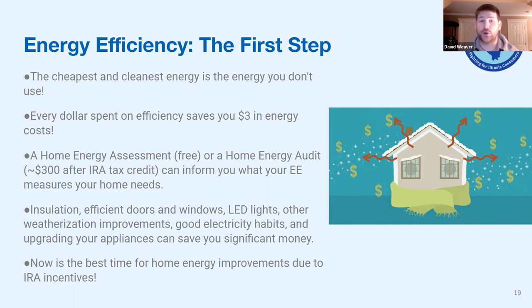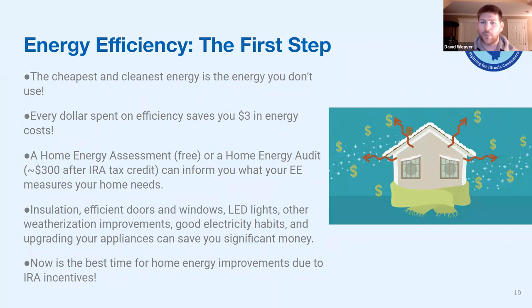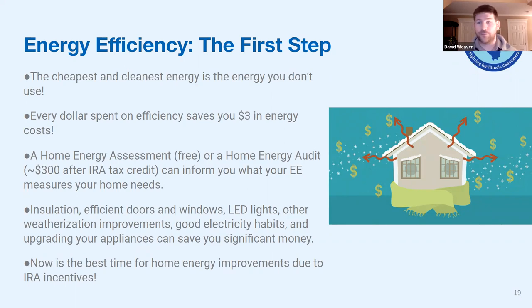The first step to energy efficiency is a home energy assessment or home energy audit. The home energy assessment is offered by ComEd or NICOR — they come to your home for free. They'll bring LED light bulbs, hot water pipe insulation, aerators for your showerheads and sinks, and a few other things — most of which they'll install for free. However, they don't bring equipment to test your home. The real first step is a home energy audit, where someone comes with a lot of equipment to actually test the building envelope, identify where you're losing heat and where drafts are coming in and out.